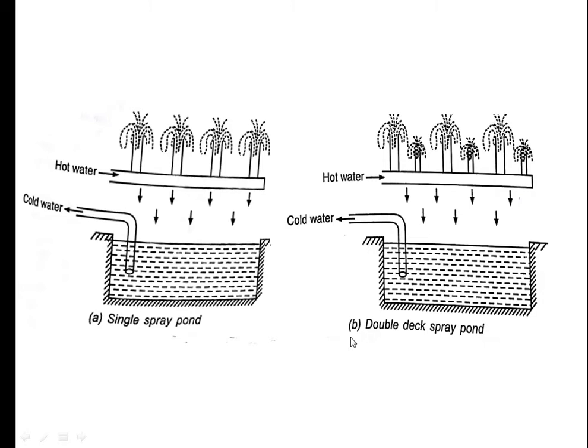The single spray pond and double deck spray pond diagrams are shown here. As you can see, the only difference is in the nozzle height. In a single spray pond, the nozzle height is the same throughout, but in a double deck spray pond, one type of nozzle is taller than the other. There are two different nozzle heights. The rest of the working is the same as I have explained.